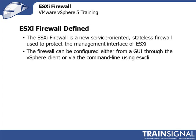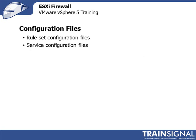Furthermore, the firewall can be configured either from a GUI, which I prefer, or you can also configure it using command line via ESX CLI. From a configuration files perspective, there are two configuration files you should be aware of: the rule set configuration files, and the service configuration files. The service configuration files define all the services that can come up and how you configure those, while the rule set configures the rules by which you can access certain services or open ports.